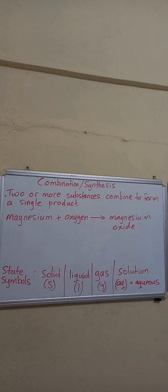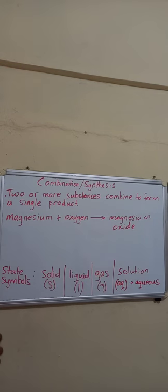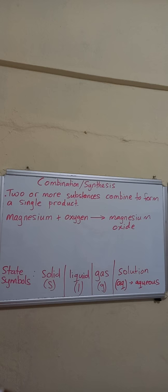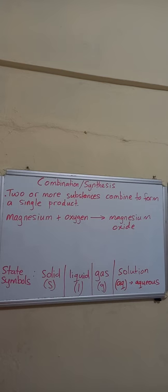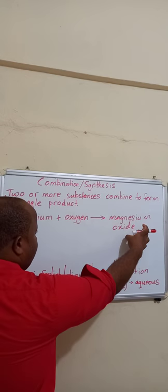The first type of chemical reaction we are going to look at is called a combination or synthesis reaction. In a synthesis reaction you are going to combine two or more substances to get one product. We have the word equation: magnesium plus oxygen produces magnesium oxide. We are going to convert it to a chemical equation using the chemical formulas for all substances involved.